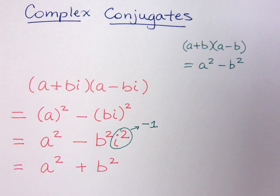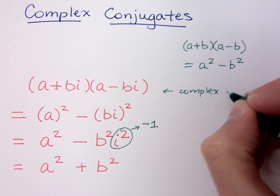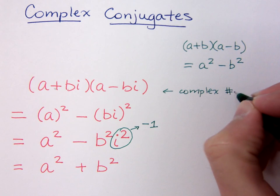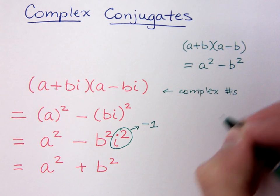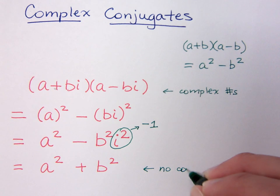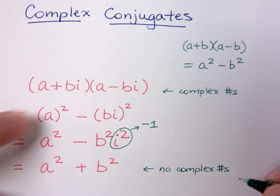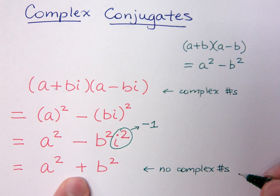What you're going to see here is that we started out with a product of complex numbers. But in this result, you see that there are no complex numbers. And that's super cool for us, because what would have been a difference of squares is now a sum of squares.